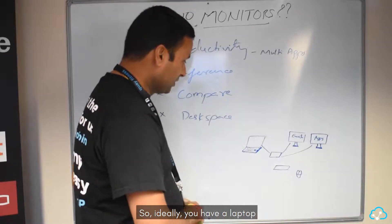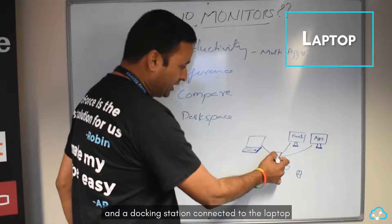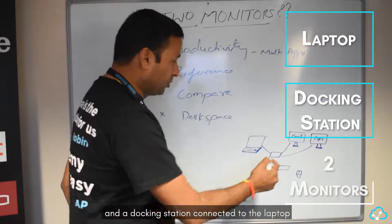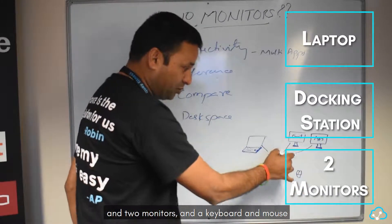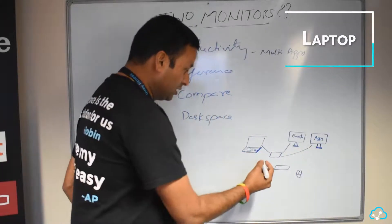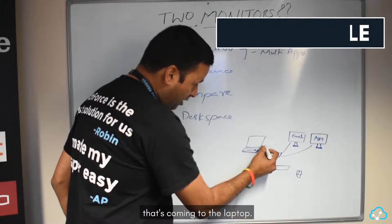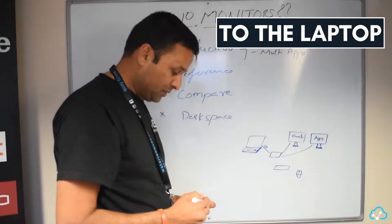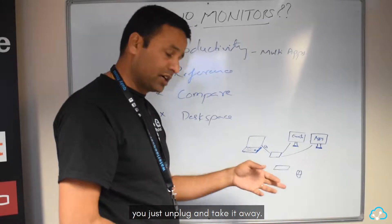So ideally you have a laptop and a docking station connected to the laptop and two monitors, keyboard and mouse connected to the docking station. So you have only one cable coming to the laptop, and when you want to take it away you just unplug and take it away.